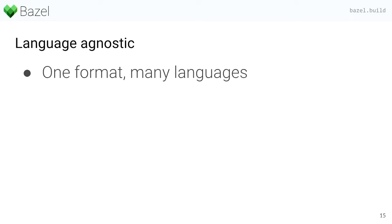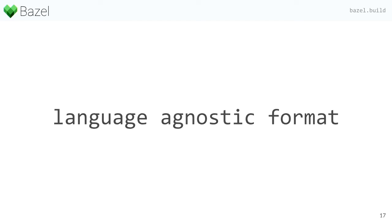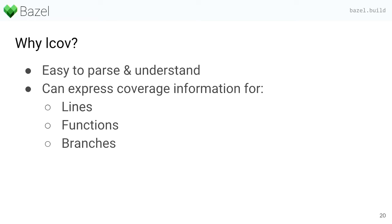Going back to being language agnostic — for that to happen, we need to have one coverage format for many languages. Imagine your code base has sources in Java, C++, and Python. You don't want to end up with three different coverage formats because that means more work — you have to know how to handle all of them, how to check them into your CI, how to parse them. So just let Bazel deal with it. We needed a language-agnostic format, and finally we went for LCOV. There are several reasons why we chose it, but the main ones are: it's easy to parse and understand, and you can express most of the coverage information — for lines, functions, and branches. You can also check for nice summaries to see if your tests pass some coverage standards your project chose.